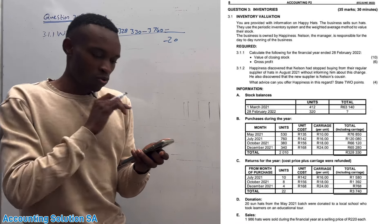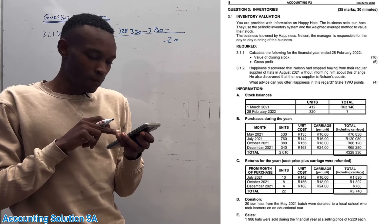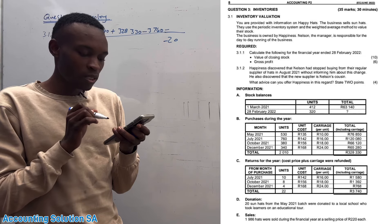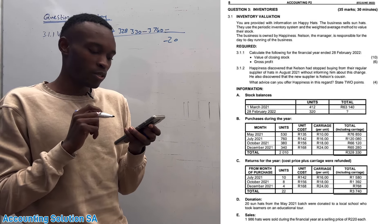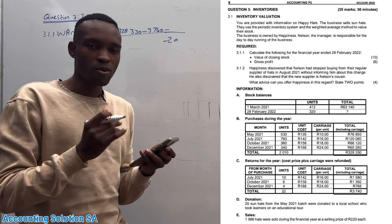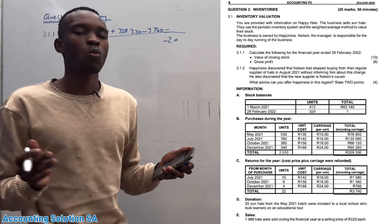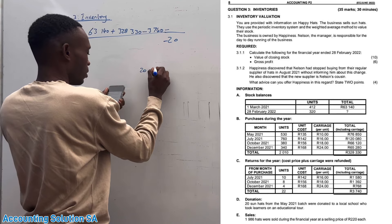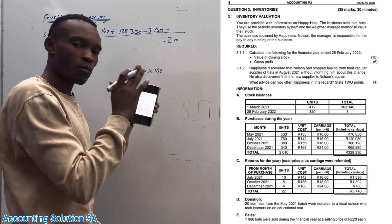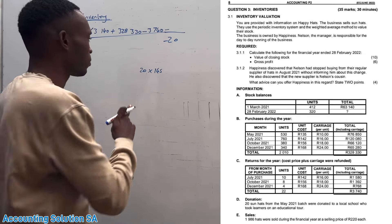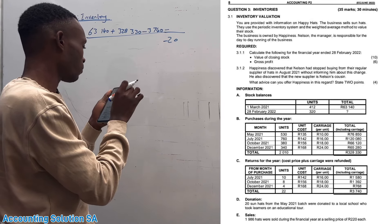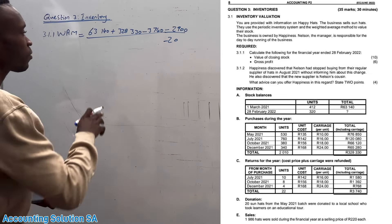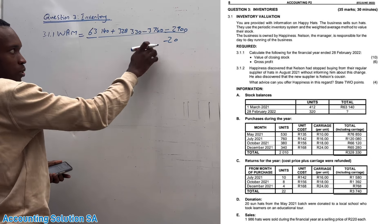They give us only the number 20 — this is not a value yet. We need to find the total value, so since these 20 units are from the May batch, let's go to May batch and check the price. In May it was costing 135 plus 10 rand carriage, which means it was 145 in total. If there is carriage it's like a transport cost and we must include it. So we calculate 20 multiplied by 145, which gives us 2,900.